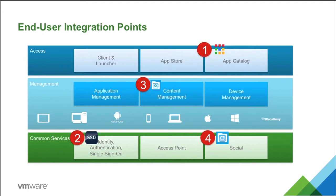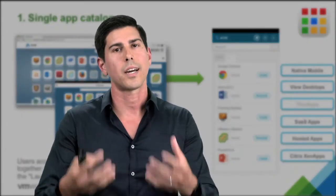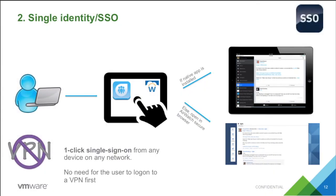Starting with a single catalog — irrespective of the device a user chooses, they'll be able to see all applications they've been entitled to by IT, and access them in a simple manner from one place. A big part of that is also single sign-on: users want to sign in once and not re-authenticate each time they access something different. Having ubiquitous single sign-on across all services is critically important, including one-click access to services behind the firewall without opening a VPN.